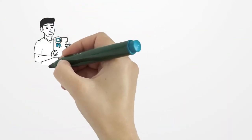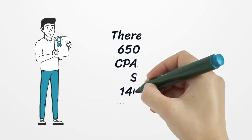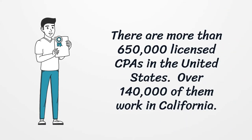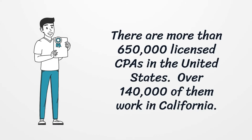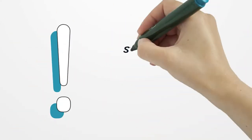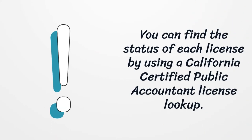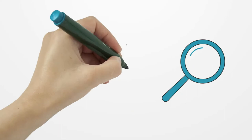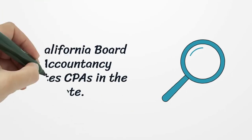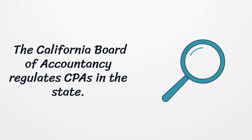There are more than 650,000 licensed CPAs in the United States, and over 140,000 of them work in California. You can find the status of each license by using a California Certified Public Accountant License lookup.